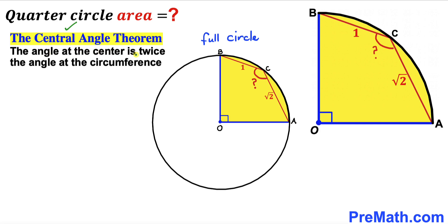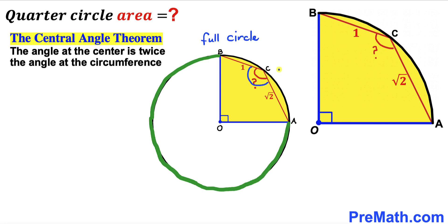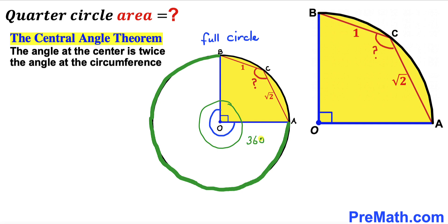According to the central angle theorem, the angle at the center is twice the angle at the circumference. Arc AB is subtended by angle ACB at the circumference. That same arc AB is also subtended by the angle at the center, and we know the quarter circle gives a 90-degree angle at the center.